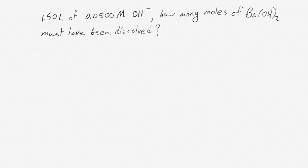In our final calculation, we have 1.50 liters of 0.500 molar hydroxide ions. And we want to know how many moles of barium hydroxide must have been dissolved to make that solution, to make a solution with that concentration of hydroxide ions. And what we do is very similar to what we did in our last example.